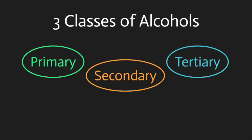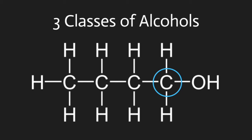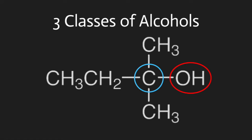Alcohols are classified into three categories: primary, secondary, and tertiary, based on the number of carbons the carbon with the hydroxyl group is covalently bound to. This alcohol here is a primary alcohol, because this carbon with the hydroxyl group is only bound to one other carbon. A secondary alcohol, like this one, has two carbons bound to this carbon. And a tertiary alcohol — you guessed it — has three carbons bound to this carbon.